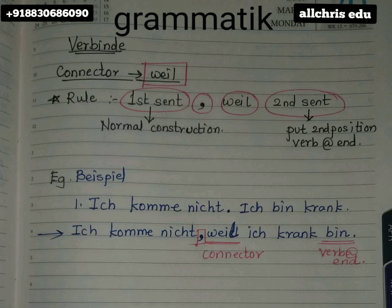Now make this very clear — there will be two sentences for you. If you see on the page written in blue color: number one, 'Ich komme nicht', which means 'I am not coming', and 'Ich bin krank', which means 'I am not well' or 'I am ill'. So 'Ich komme nicht' means I am not coming, because I am not well.